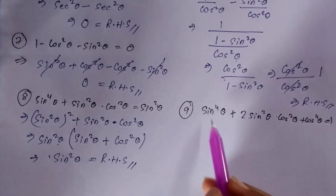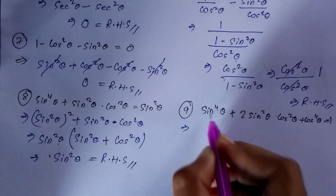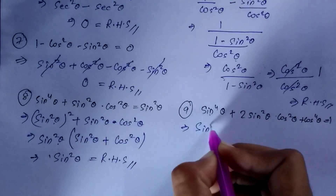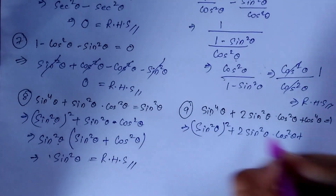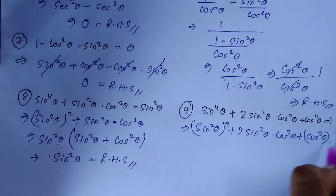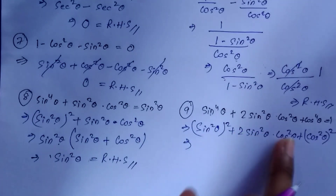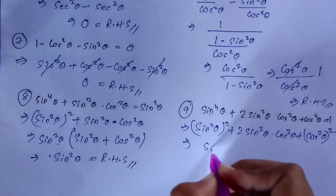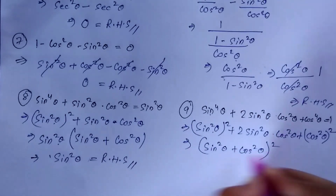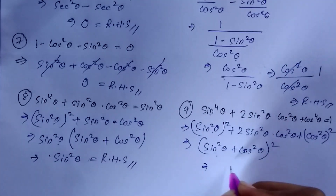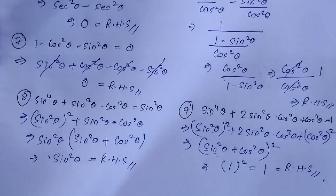Question number 9: prove that sin⁴θ + 2sin²θ · cos²θ + cos⁴θ = 1. We write sin⁴θ as (sin²θ)² and cos⁴θ as (cos²θ)². This matches the formula a² + 2ab + b² = (a + b)², so it becomes (sin²θ + cos²θ)². We know sin²θ + cos²θ = 1, so 1² = 1, which equals your RHS. Hence proved.